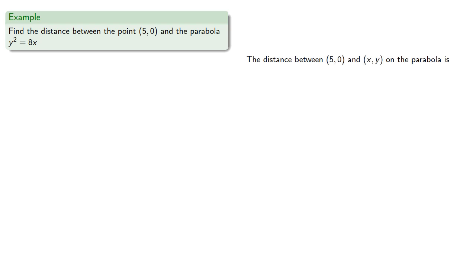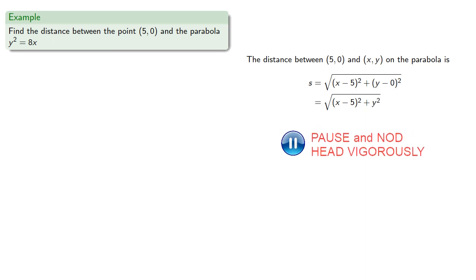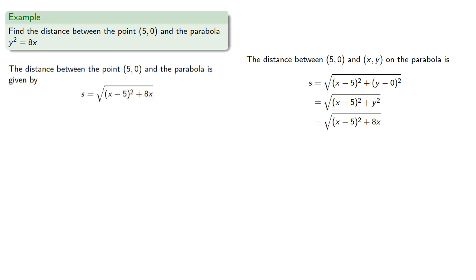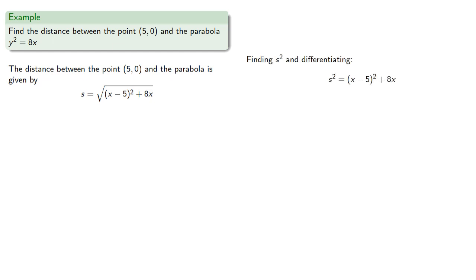So again, the distance between our point (5,0) and some point on the parabola will be s = √[(x-5)² + 8x]. But equals means replaceable, so y² = 8x, and so we can rewrite this. And again, we want to find the minimum distance, so we'll find s squared and differentiate.